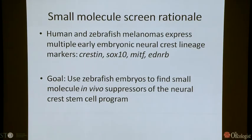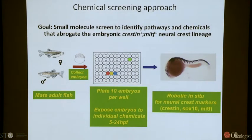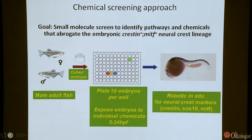We decided to take a small molecule approach to ask: could we use the zebrafish system to find small molecule in vivo suppressors of the neural crest stem cell program — something that wouldn't easily be done in cell culture? We generated about 25,000 animals, plated them into individual wells with a different chemical per well — about 10 embryos per well — and stained them for early embryonic neural crest markers. Each purple cell represents an early neural crest stem or progenitor cell in this assay.